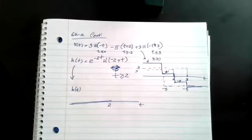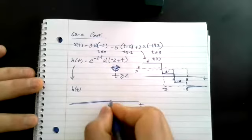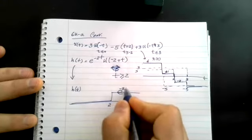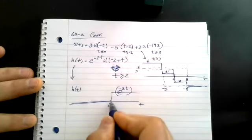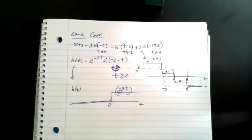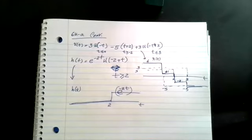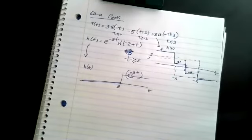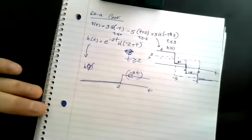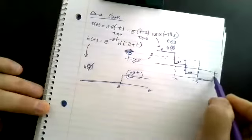You don't want to get wrapped up in what that curve looks like — just draw a line after T equals two and label it E to the minus two T. Now in order to make this H of tau, all I have to do is replace T with tau. That gives me H of tau.